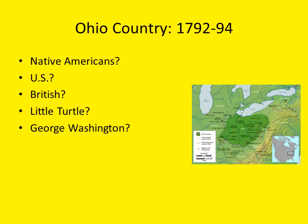Little Turtle, however, was wary of what was happening. He did not underestimate the power of the young United States like many of his contemporaries. Unlike many other Native American leaders, he had a clear vision of just how rapidly white population was growing in the region and how difficult it would be to reverse the waves of white settlement that had already taken place in the Ohio country.